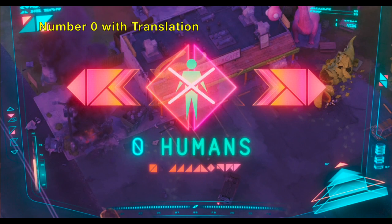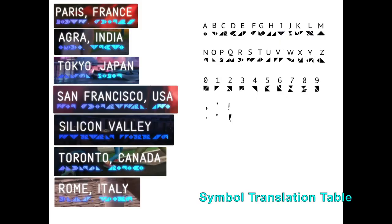Here's another one where I got the numerical digit zero from this scene. From all these scenes I was able to build this chart — a simple translation table of the English and Roman alphabet into the triangle version of the machine symbols.